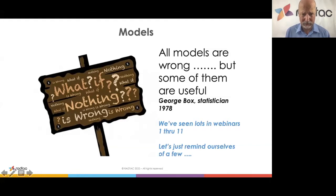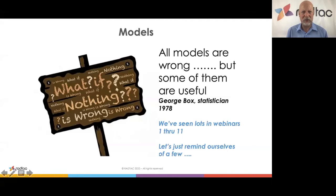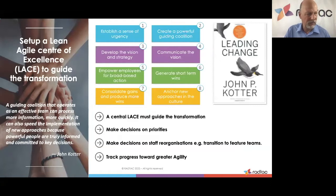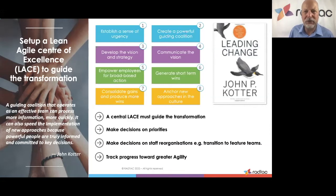In previous webinars one through eleven, we've seen culture models, agile framework models, power and influence models, measurement models, and many more. Let's just remind ourselves of a few. This is a slide from SAFe — the Scaled Agile Framework — actually showing Kotter's eight-step transformation process. I'd highly recommend looking at Kotter's work. Number one: establish a sense of urgency, or remove complacency.